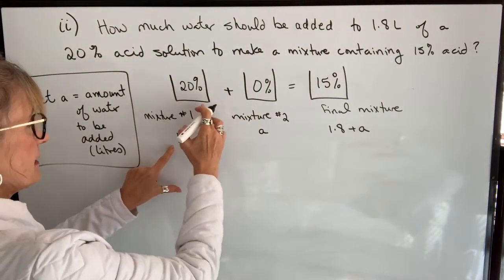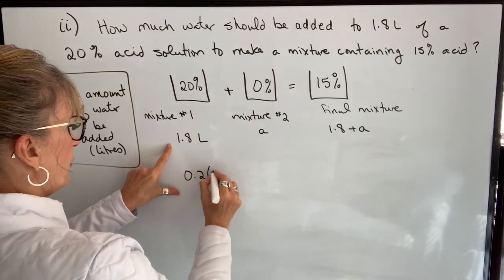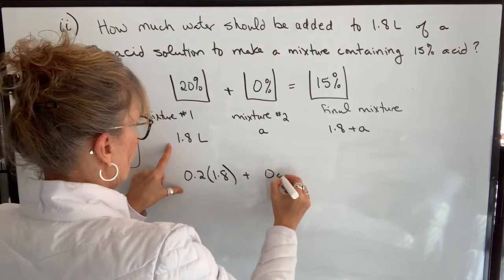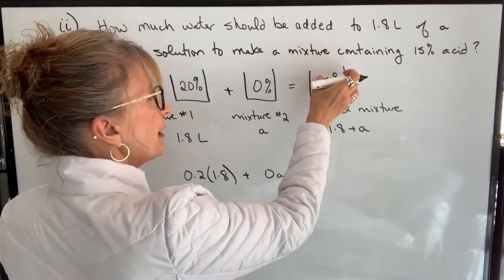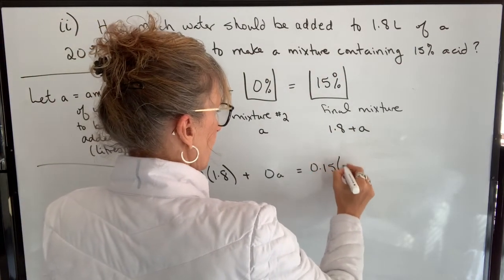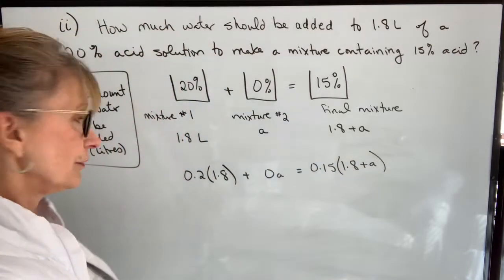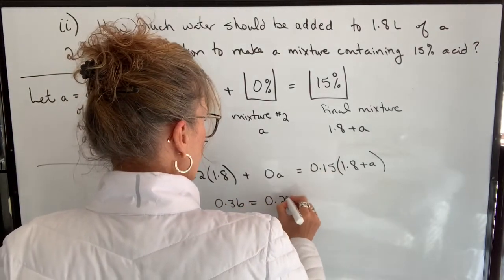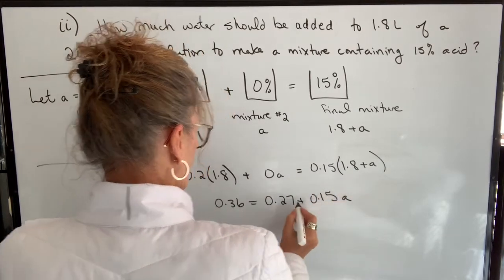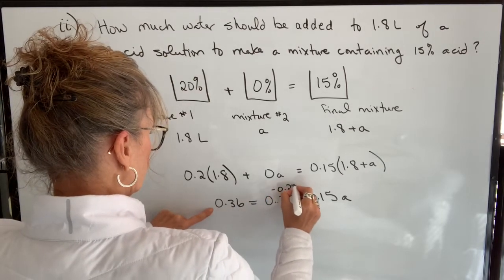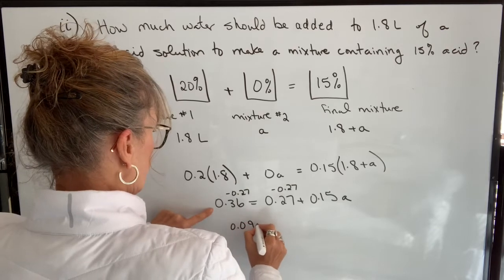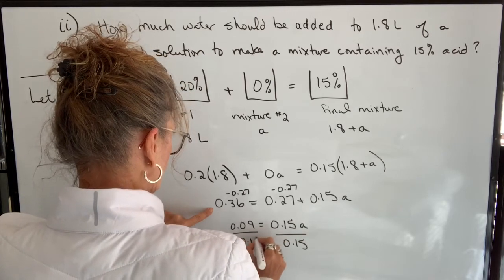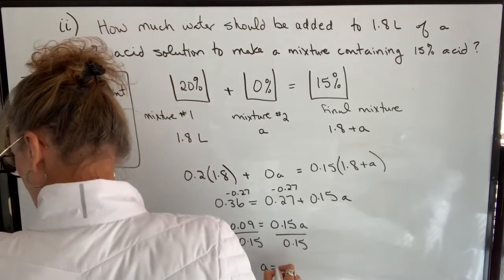We say the amount of acid in the first mixture — 20% of 1.8 — plus the amount of acid in the second mixture, which is zero (it's straight water), equals the amount of acid in the final mixture: 15% of (1.8 plus A). Solving: 0.36 equals 0.27 plus 0.15A. Subtract 0.27 from both sides to get 0.09 equals 0.15A. Divide both sides by 0.15 and A equals 0.6.